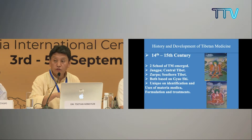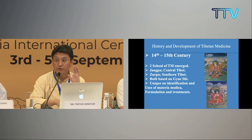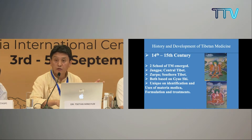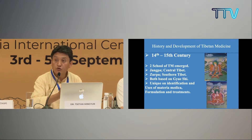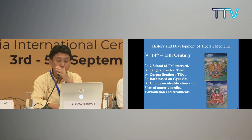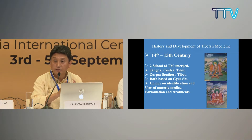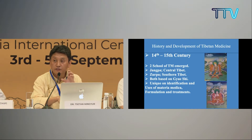In the fourteenth and fifteenth centuries, two schools of Tibetan medicine emerged. One is the Jangpa school of medicine, which flourished mostly in central Tibet. The other is the Zur tradition of Tibetan medicine, which flourished mostly in southern Tibet. The main differences between these two schools are based on certain treatments and the identification and use of some plants, since certain plants do not grow in both regions. However, both traditions are based on the principal text, Gyushi.